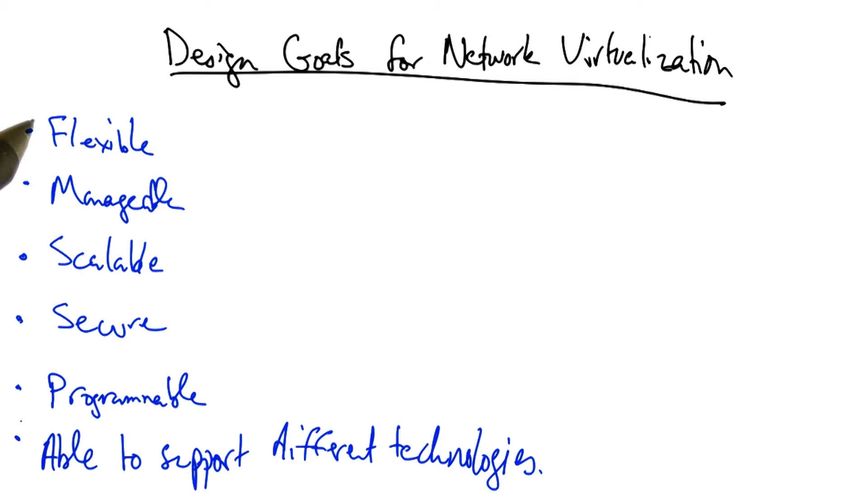Virtual networks have various design goals. They should be flexible, able to support different topologies, routing and forwarding architectures, and independent configurations.